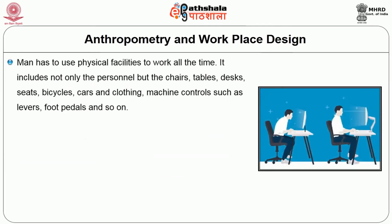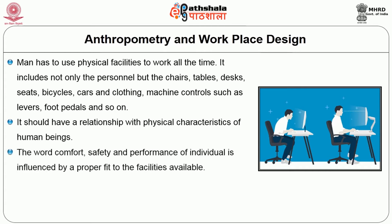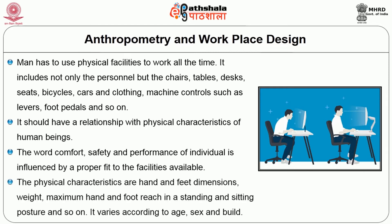Man has to use physical facilities to work at all times. These include not only personal items but also chairs, tables, desks, seats, bicycles, cars and clothing. Machine controls such as levers and foot pedals should have a relationship with the physical characteristics of human beings. The comfort, safety and performance of individuals is influenced by a proper fit to the available facilities. Physical characteristics include hand and feet dimensions, weight, maximum hand and foot reach in standing and sitting postures, and vary according to age, sex and build.